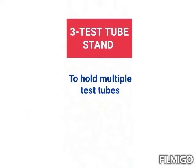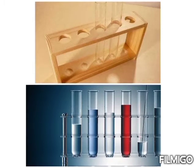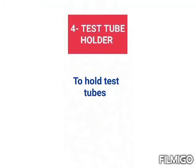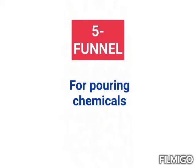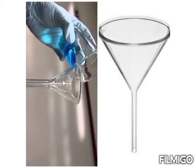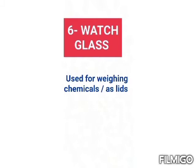Next is the test tube stand, which is used to keep multiple test tubes altogether. Next is the test tube holder, which is used to hold test tubes while performing any chemical reaction. Next is the funnel, which is used for pouring chemicals during chemical reactions.